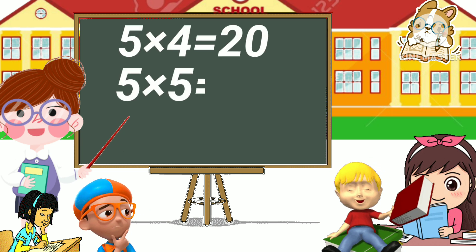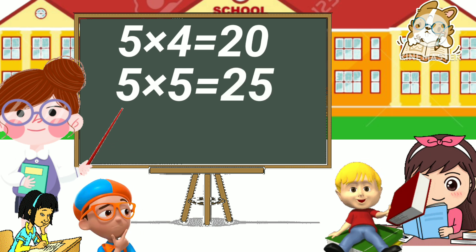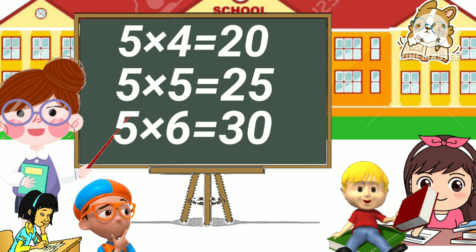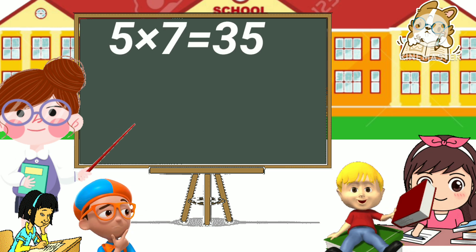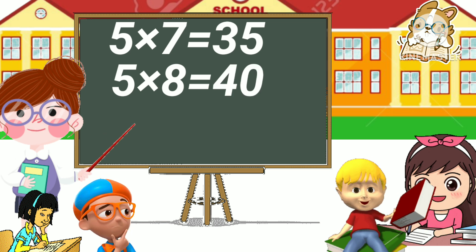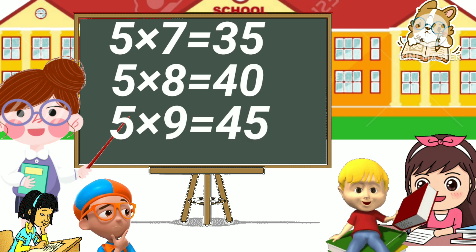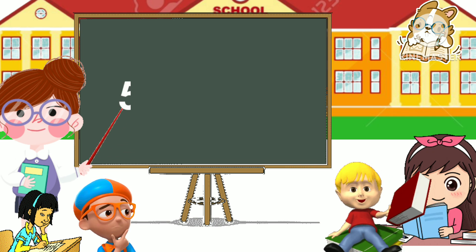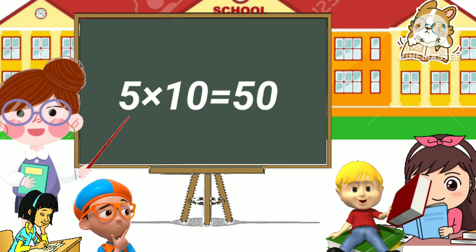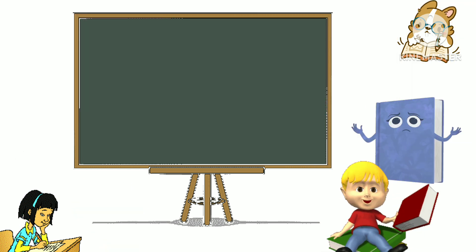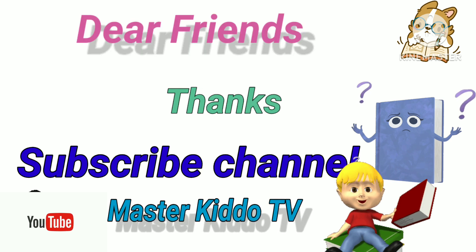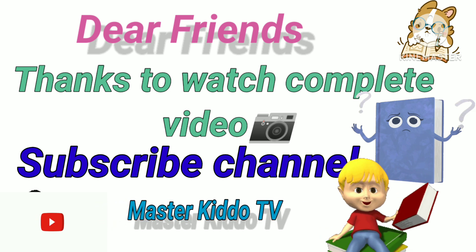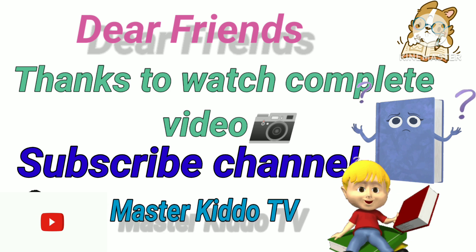Five four has twenty, five five has twenty-five, five six has thirty, five seven has thirty-five, five eight has forty, five nine has forty-five.